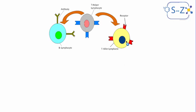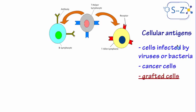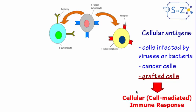We have two types of lymphocytes. We have the T killer lymphocytes which are activated when the antigen is a cellular antigen, meaning cells infected by viruses or bacteria, cancer cells, or grafted cells. By this, the cell-mediated immune response will be activated. But when the antigen is a circulating antigen,